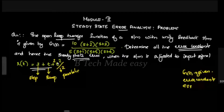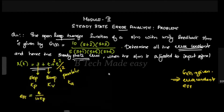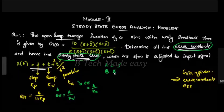The error constants are called Kp, Kv, and Ka. We will find out what each constant is and what the corresponding ESS values are for the given inputs. The step input corresponds to constant A, the ramp input corresponds to A, and the parabolic input is half t-squared.